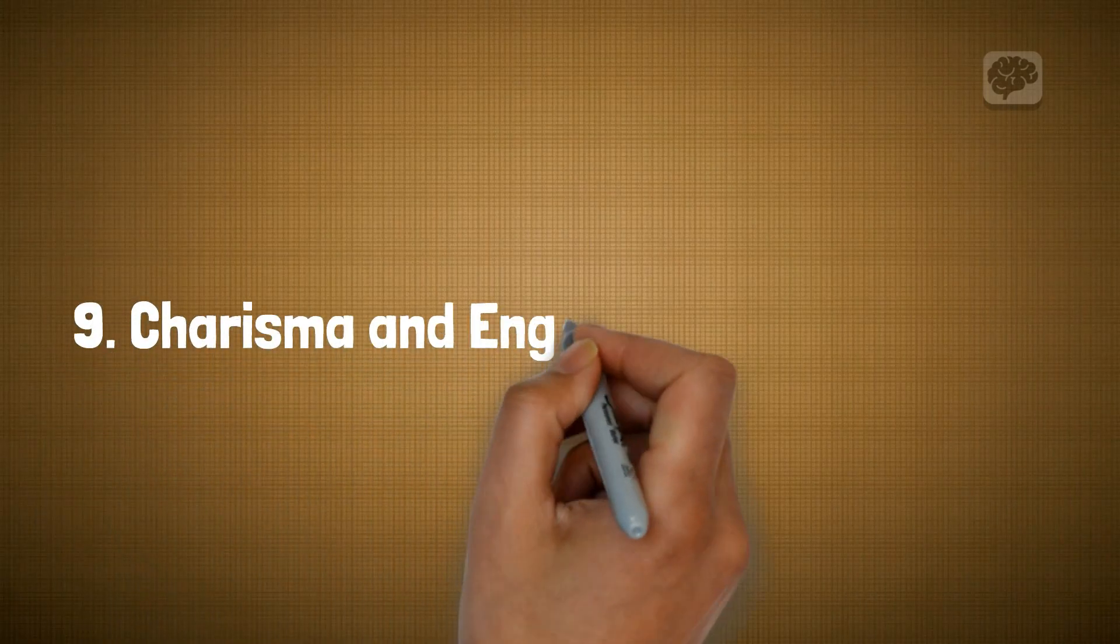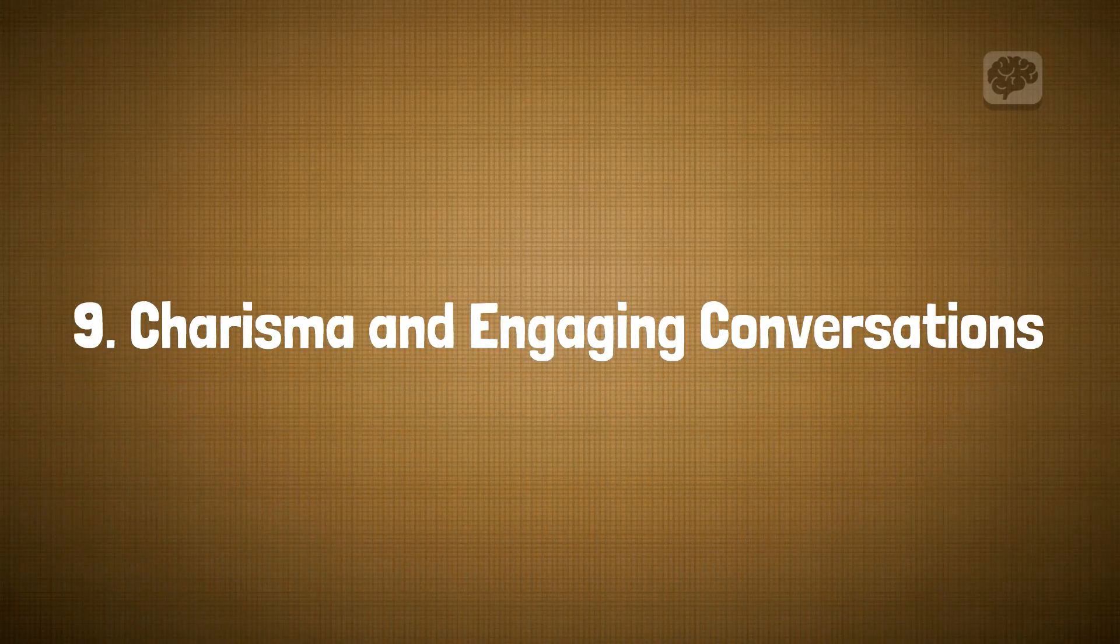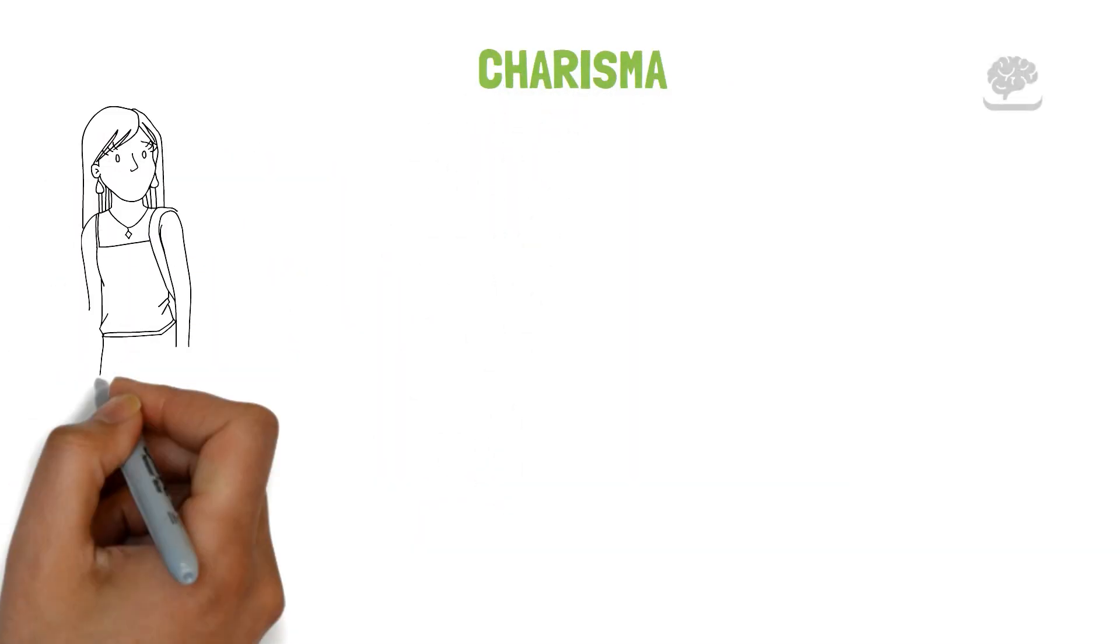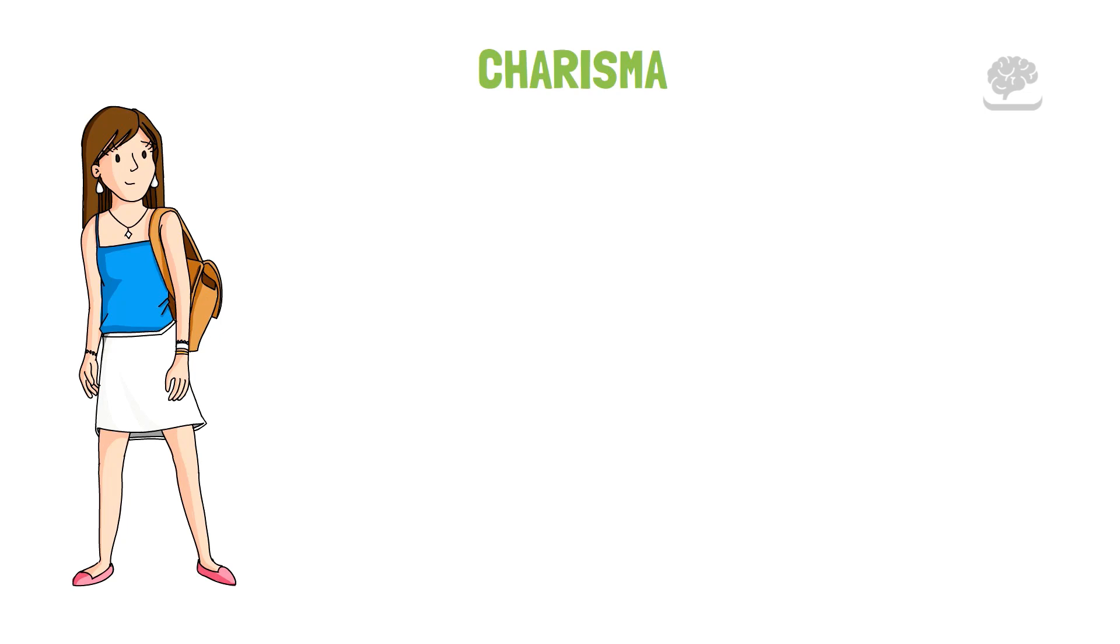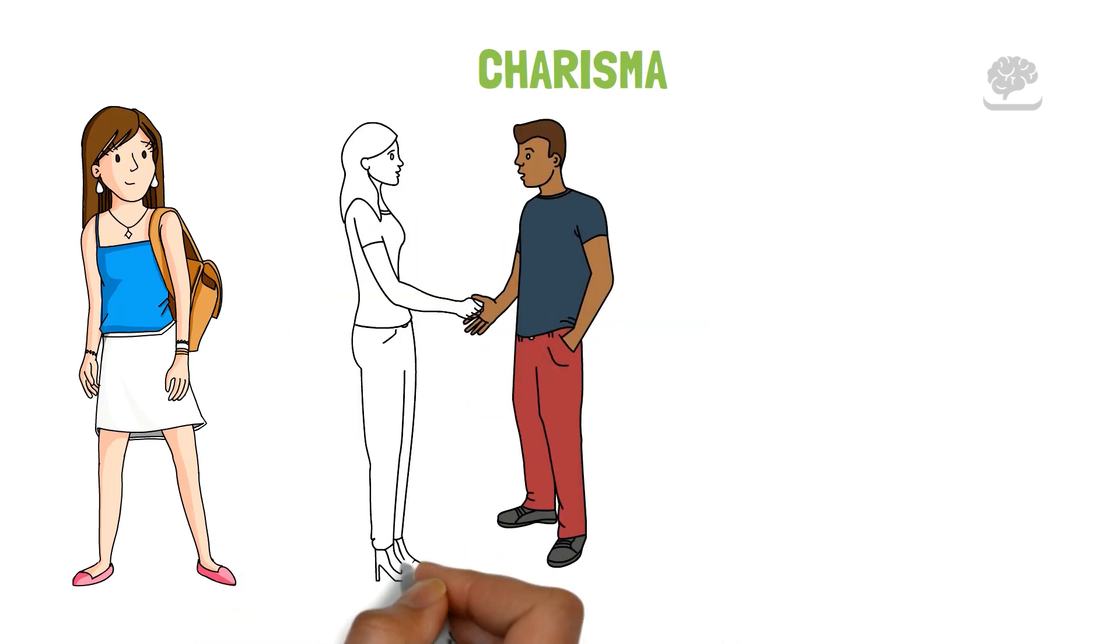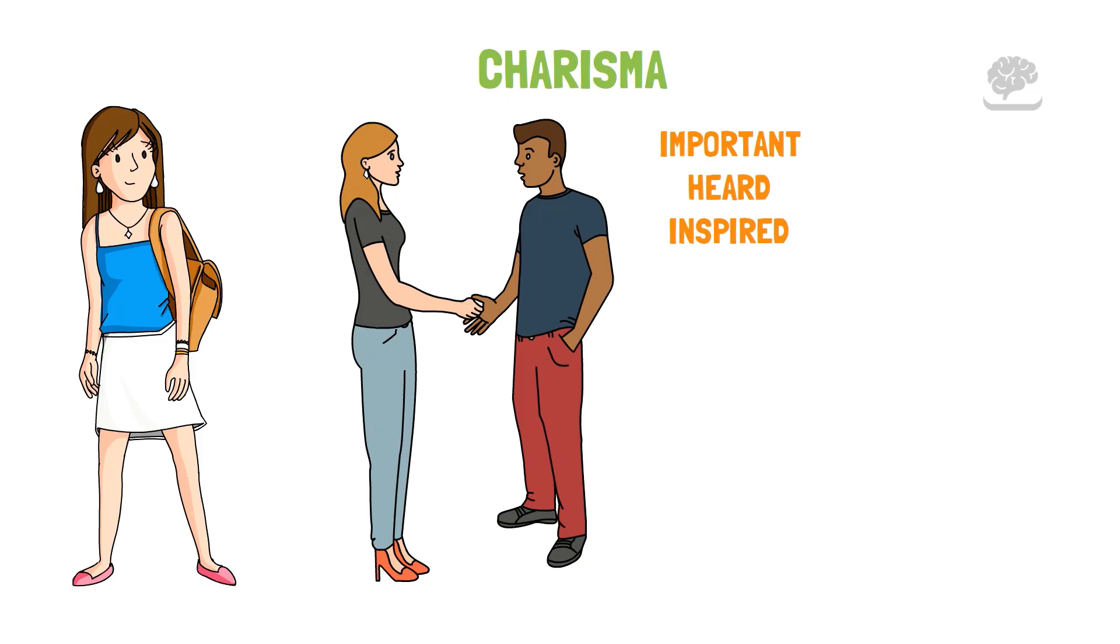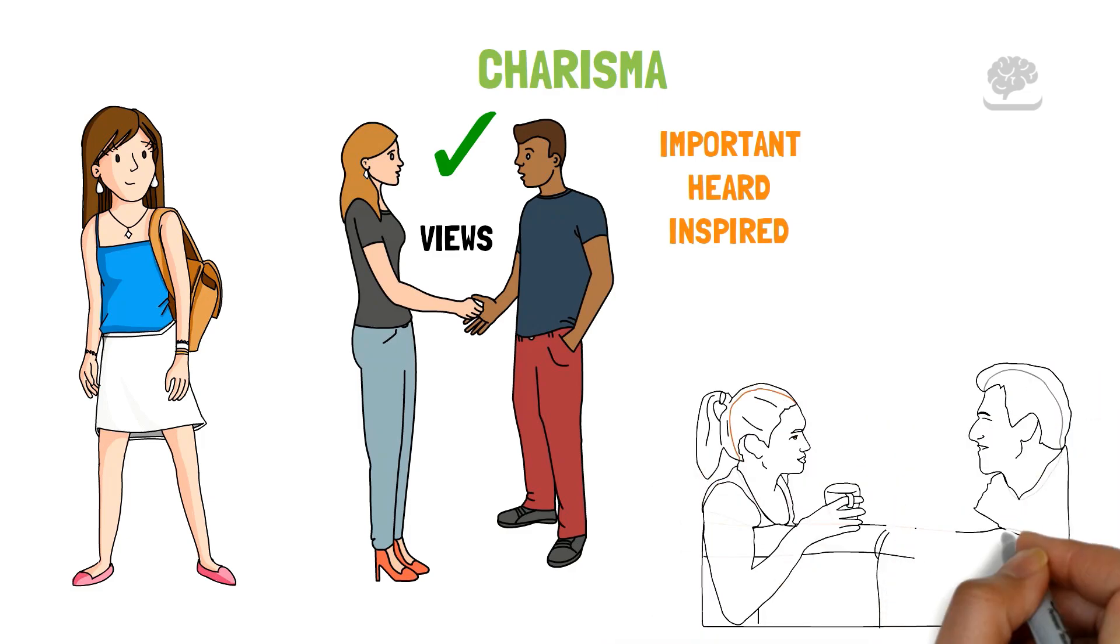Number 9: Charisma and Engaging Conversations. Charisma is a special quality that goes beyond looks and has a strong impact on people. Being charismatic means you can easily talk to others and make them feel important, heard, and inspired. You're good at connecting with people because you're truly interested in their views. Your great listening ability helps you understand and relate to others deeply.